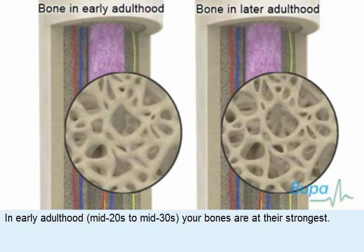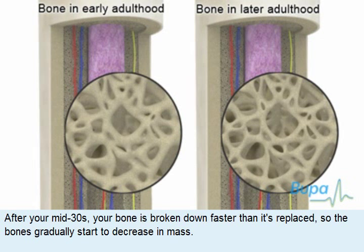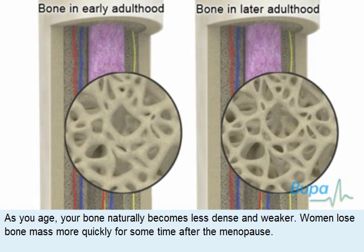In early adulthood, mid-twenties to mid-thirties, your bones are at their strongest. This is because at this point your bone is being broken down and replaced at about the same rate. This is known as the peak bone mass. After your mid-thirties, your bone is broken down faster than it's replaced, so our bones gradually start to decrease in mass. As you age, your bone naturally becomes less dense and weaker.